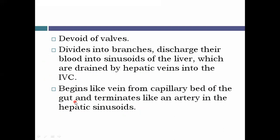The portal vein transports blood and nutrients from the stomach, spleen, intestine, and gallbladder to the liver. In contrast, the hepatic vein carries deoxygenated blood from the liver to the right atrium via the inferior vena cava.